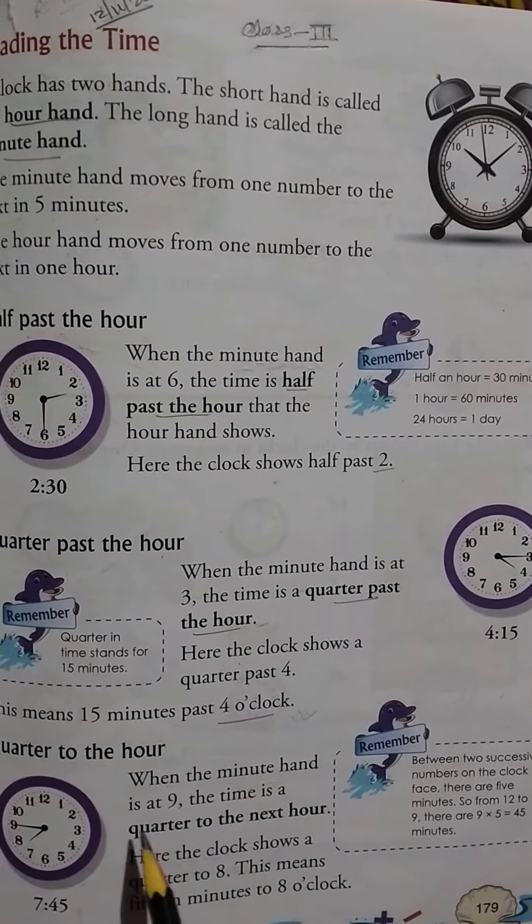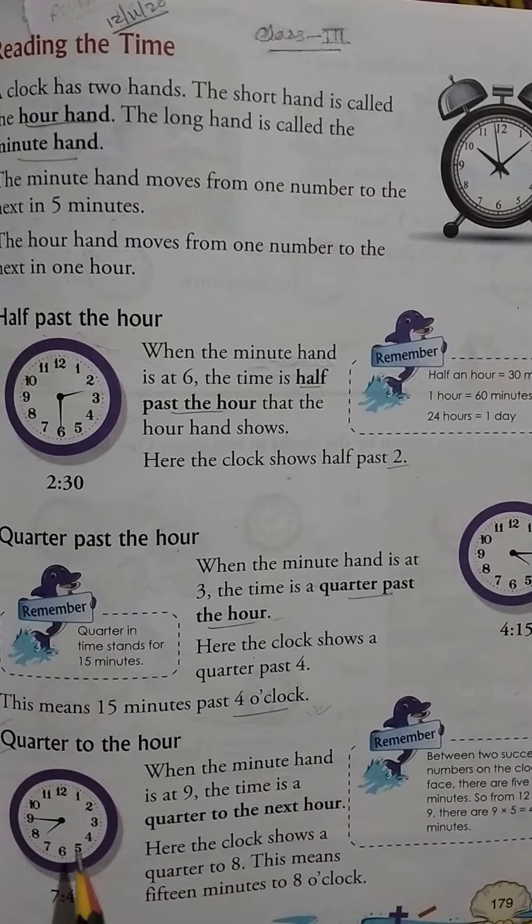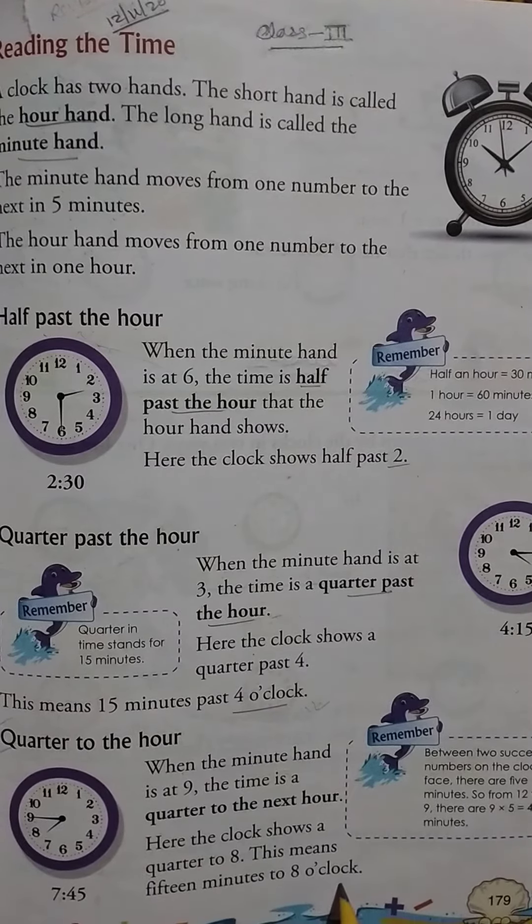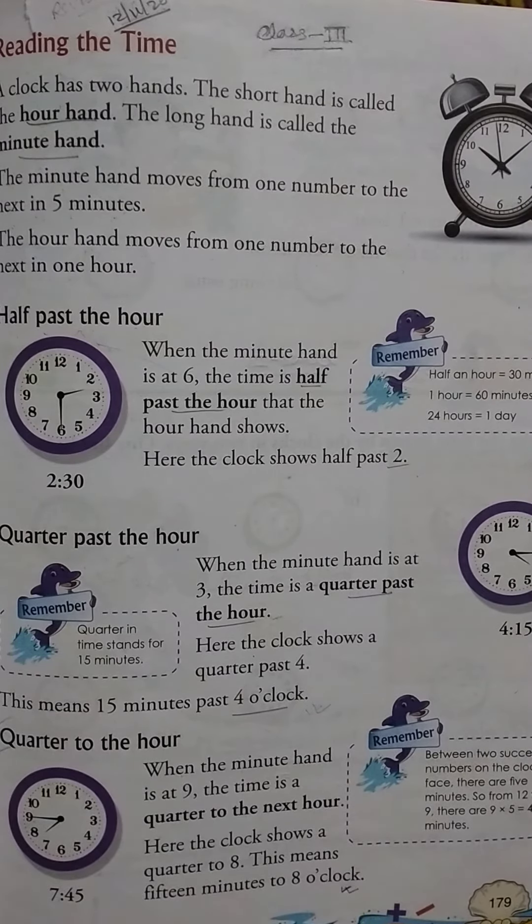When the minute hand is at 9, the time is a quarter to the next hour. Here the clock shows a quarter to 8. This means 15 minutes to 8 o'clock. Okay, thank you.